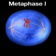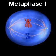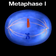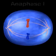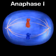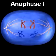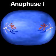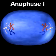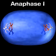During metaphase I, tetrads line up on the equator of the spindle. During anaphase I, homologous chromosomes separate and move to opposite ends of the cell. This critical step ensures that each new cell will receive only one chromosome from each homologous pair.